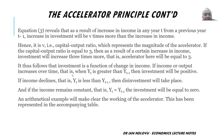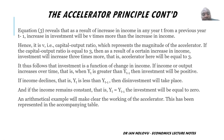If the capital-to-output ratio equals three, then as a result of a certain increase in national income, investment will increase three times more — the accelerator will equal three. It follows that investment is a function of the change in national income. If income increases — that is Yt > Yt−1 — investment will be positive. If income declines, investment will be negative (disinvestment). If income remains constant, investment will be zero.